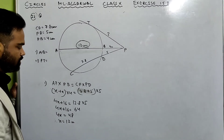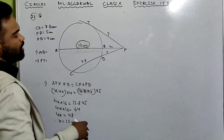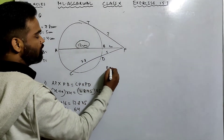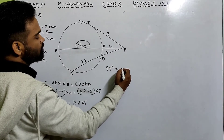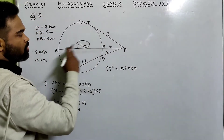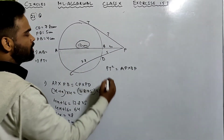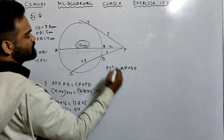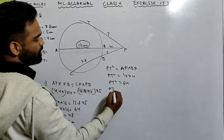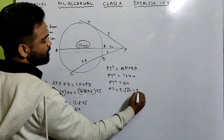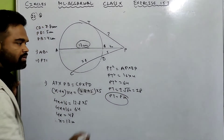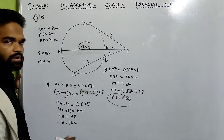Now for the length of tangent PT: PT² = AP × PB. AP = 12 + 4 = 16 cm, PB = 4 cm. So PT² = 16 × 4 = 64, giving PT = ±√64 = ±8. Taking the positive value, PT = 8 cm. You just need to remember the theorem.